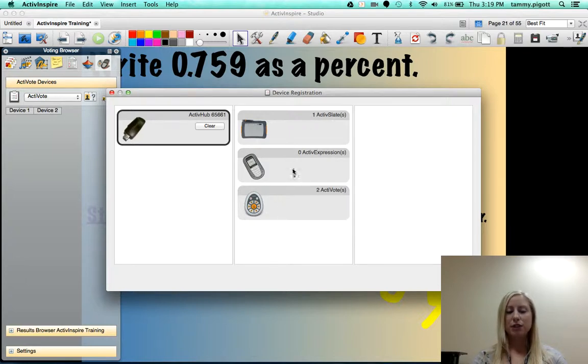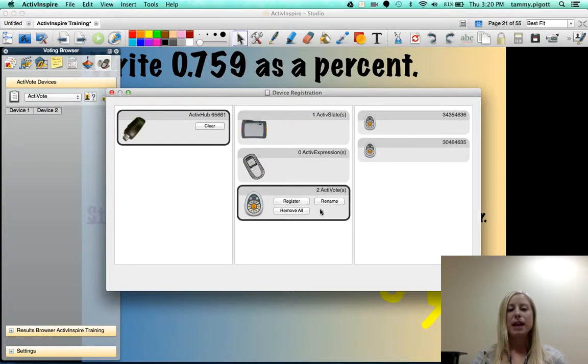Depends on what device you're trying to register but let's say you're trying to do active votes so you'll click on the active votes and then it'll pop up some different devices. I actually have two active votes registered to this device here but in order to register you see three buttons: you've got register, you can remove all, and then you can rename.